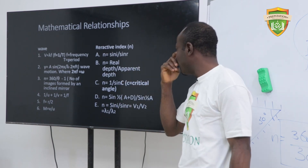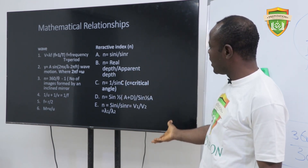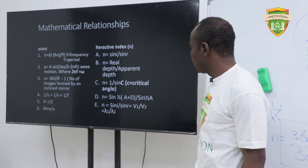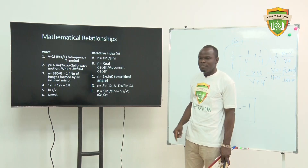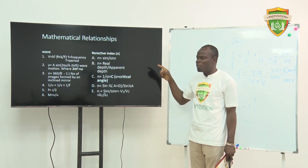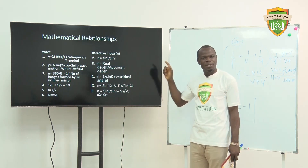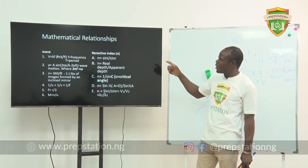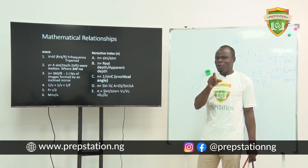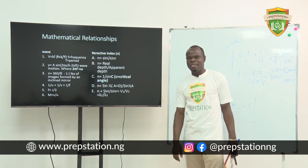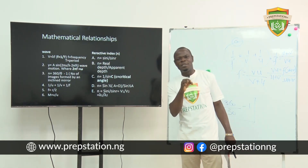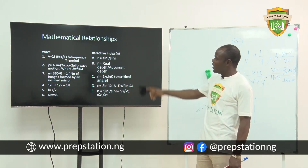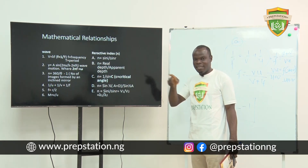Now the refractive index formulas. Formula A: the refractive index n = sin(i) / sin(r), the ratio of the sine of the angle of incidence to the sine of the angle of refraction. This is the second law of refraction, also known as Snell's law, which states that this ratio is constant for a given pair of media.